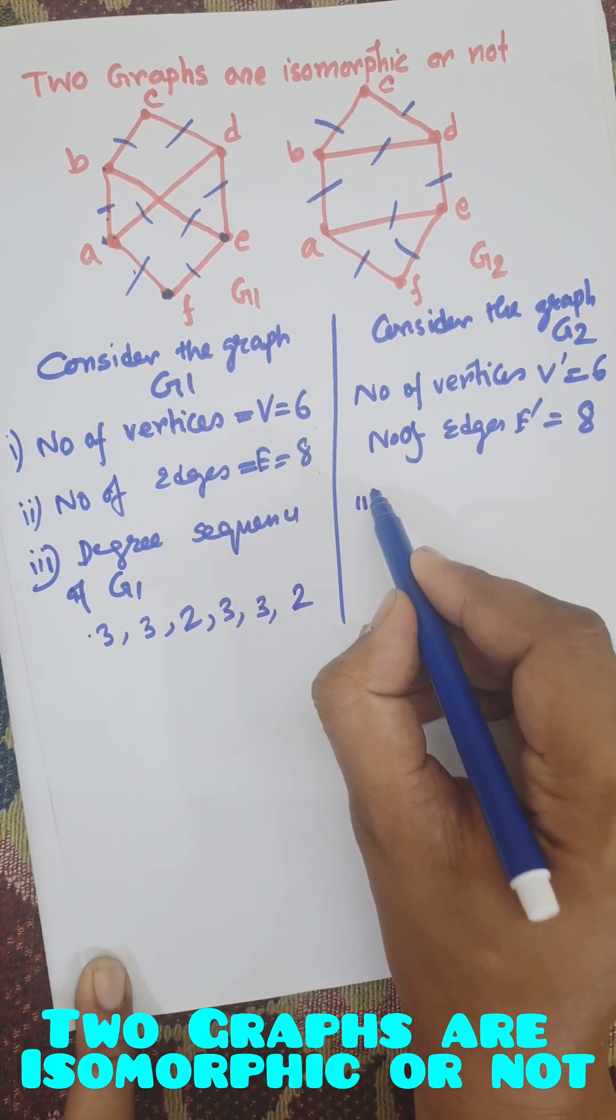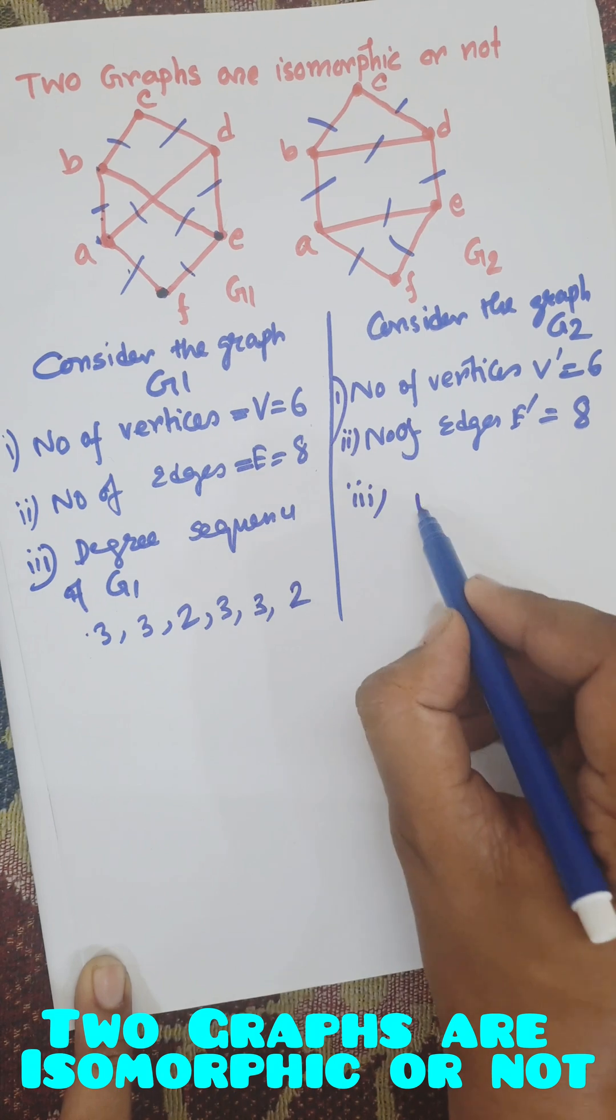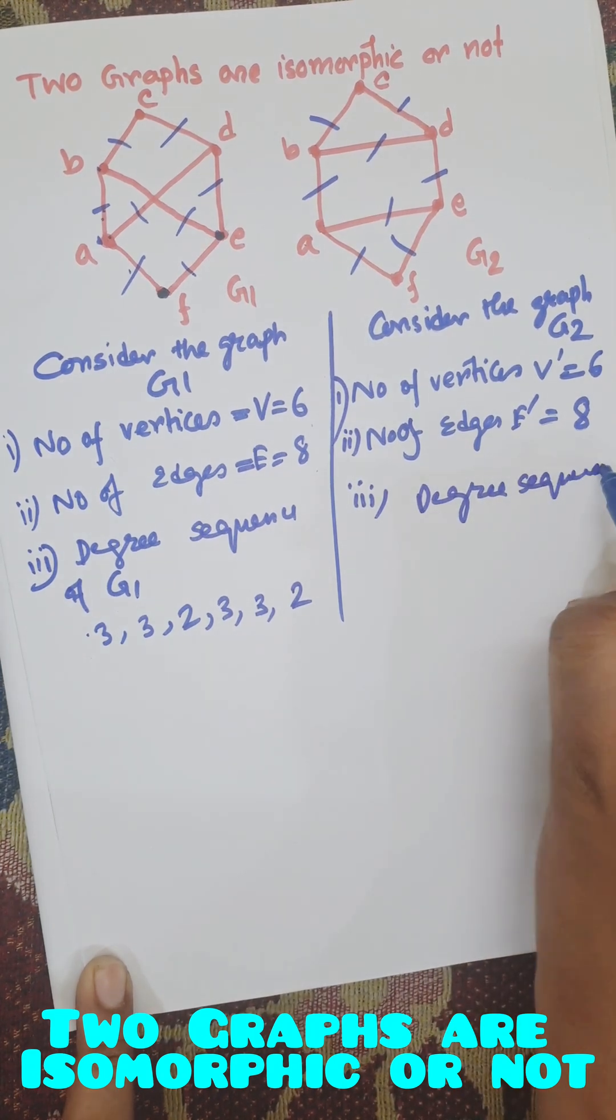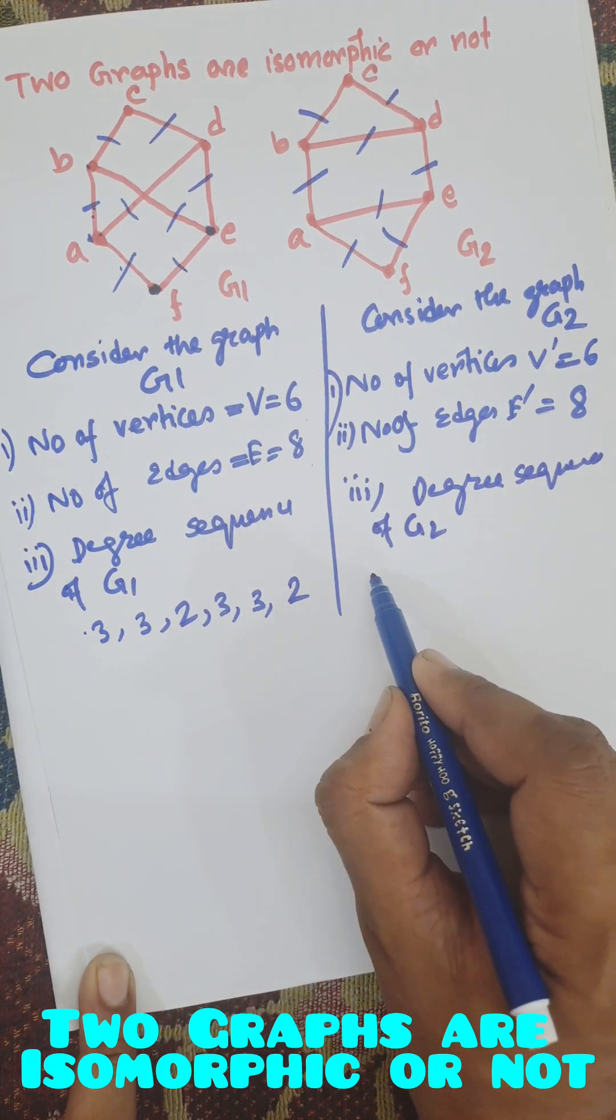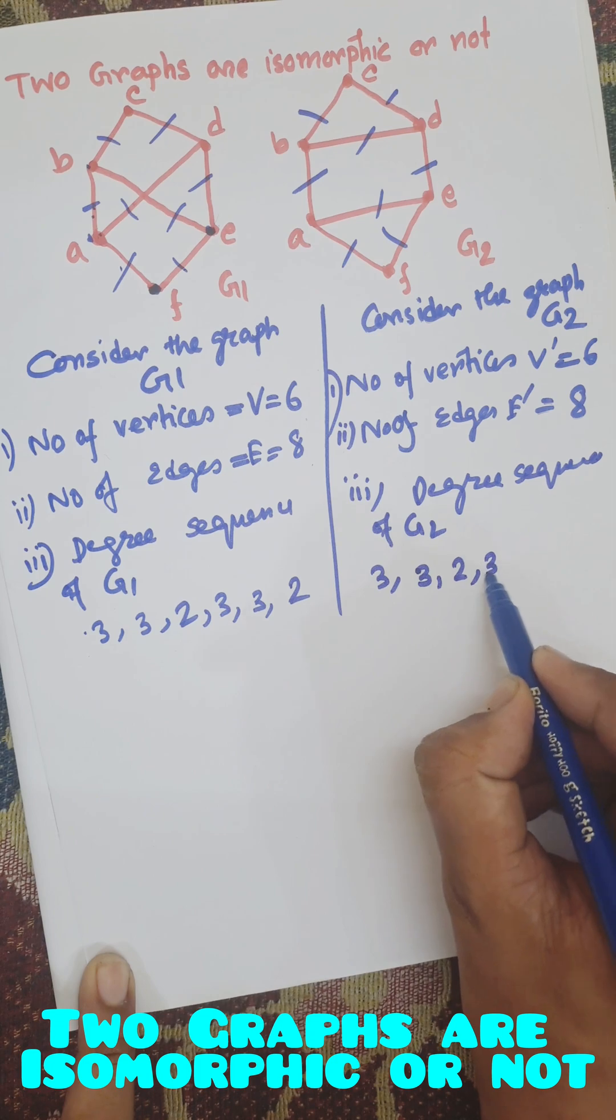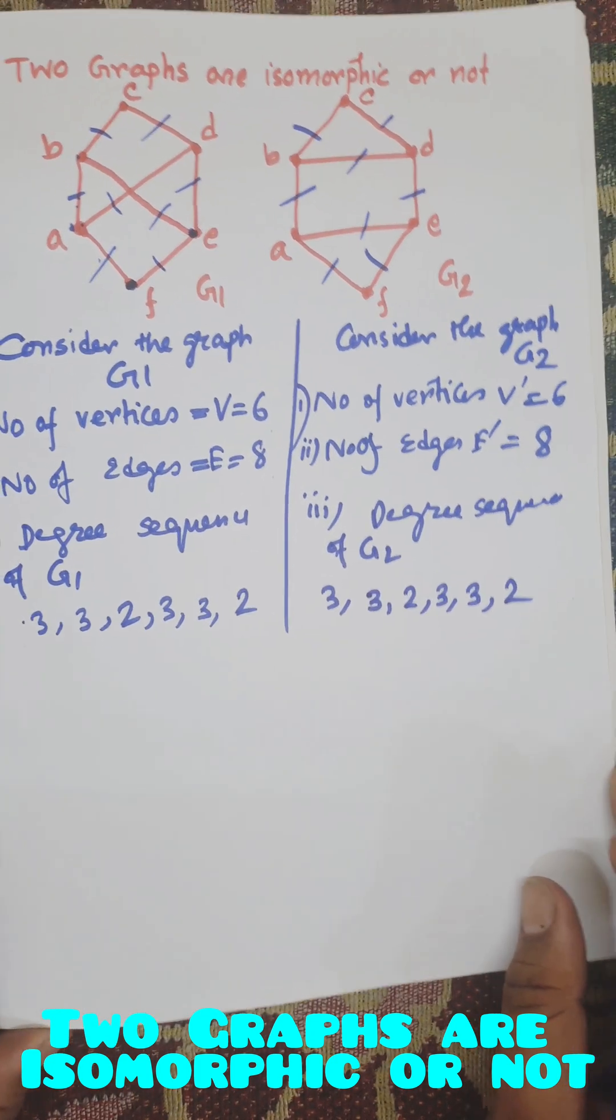Here degree sequence of G2. That is A is 3, B is 3, C is 2, D is 3, E is 3, F is 2. So degree sequences are equal.